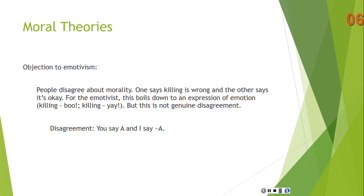A disagreement means you say A and I say not-A. But that's not what's going on when you express emotions — when I think of killing, it makes me sad, and when another person thinks of killing, it makes them happy or apathetic. They're not disagreeing; one just feels happy and the other feels sad about a certain thing. So, if you think there can be genuine disagreement in morality, you shouldn't be an emotivist, because on emotivism there can't be genuine disagreement — just different expressions of emotion.